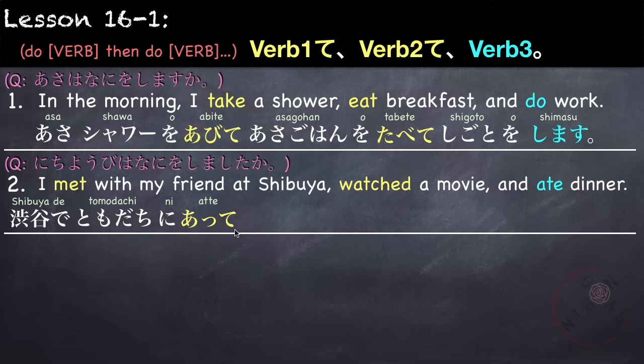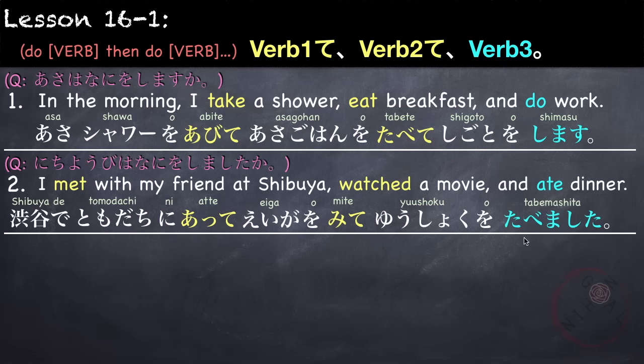We just use the te form of the verb, and then only the last part will determine the tense of the whole sentence. So, Shibuya de tomodachi ni atte. Next is, watch a movie. Eiga o mite. So, watch is mimasu. And then lastly, ate dinner. Yushoku o tabemasu becomes, it is in a past tense, tabemashita. Shibuya de tomodachi ni atte, eiga o mite, yushoku o tabemashita.